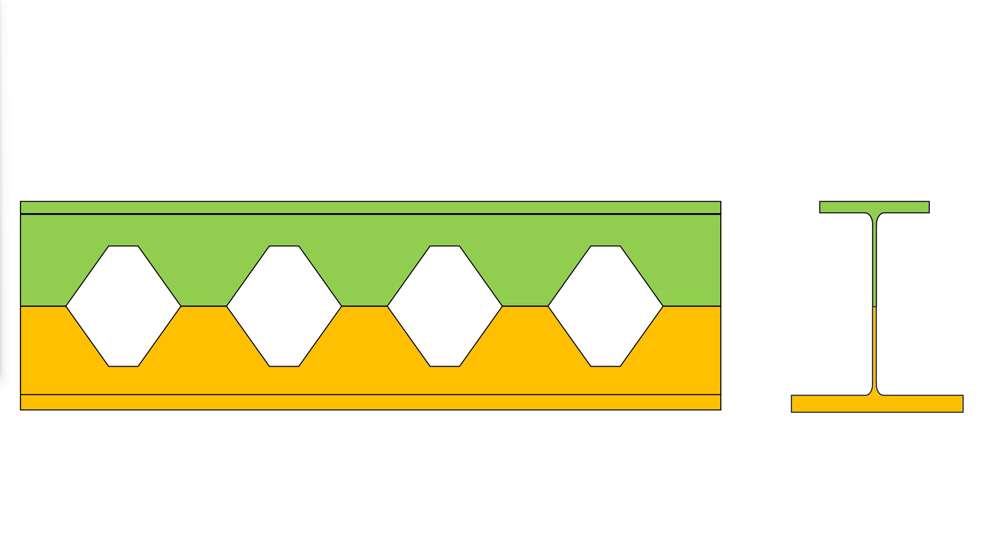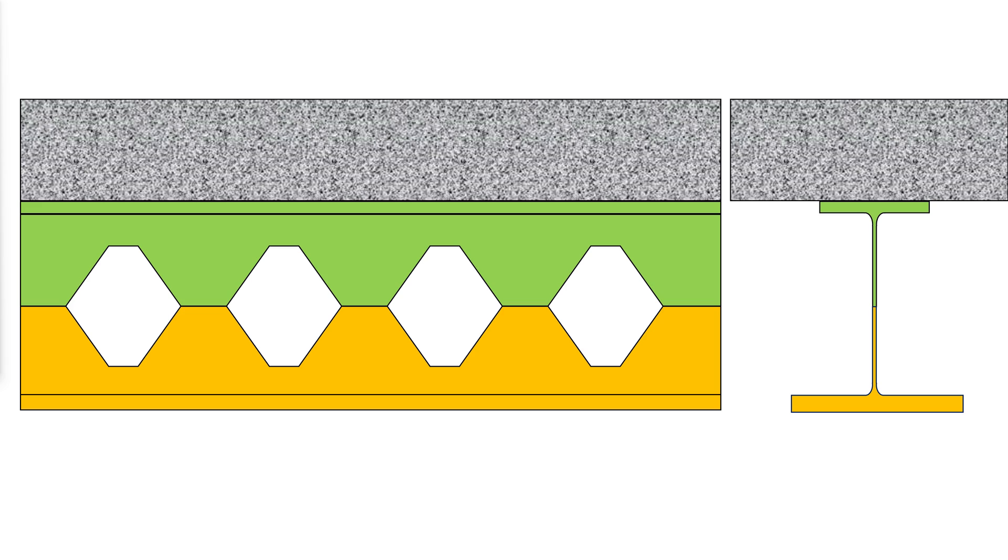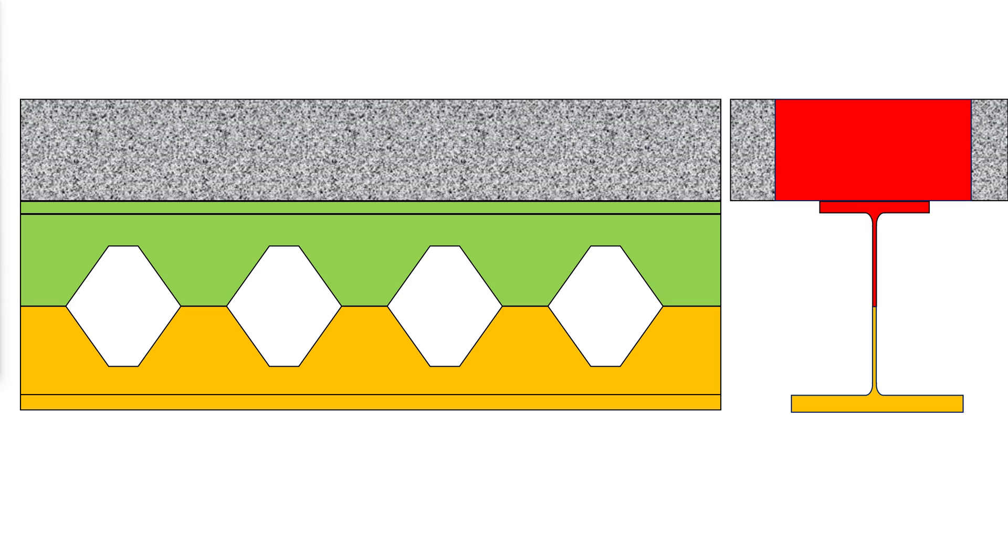The manufacturing process used to fabricate castellated and cellular beams involves cutting the root beam into two sections. Provided that the opening space is identical, the halves of two root beams can be welded together to create an asymmetric shape. This is specially advantageous for composite applications, where the top T works in conjunction with the concrete slab. For composite design it is typically cost effective to specify an asymmetric section, using a smaller root beam for the top T and a larger one for the bottom T.